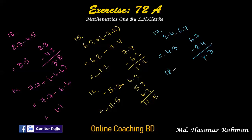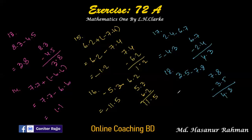Number eighteen: 3.5 minus 7.8. We subtract 3.5 from 7.8: 8 minus 5 is 3, 7 minus 3 is 4, so the answer is 4.3. The sign of the larger number is negative, so the answer is minus 4.3.